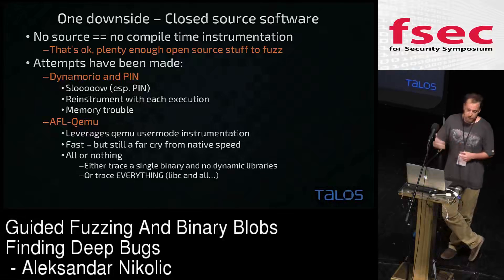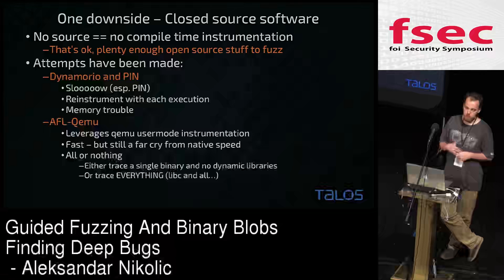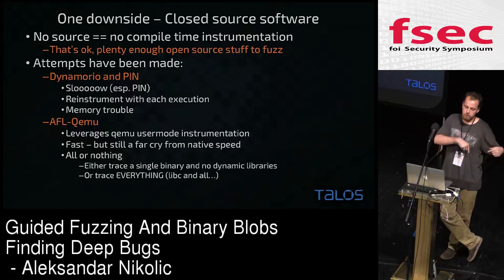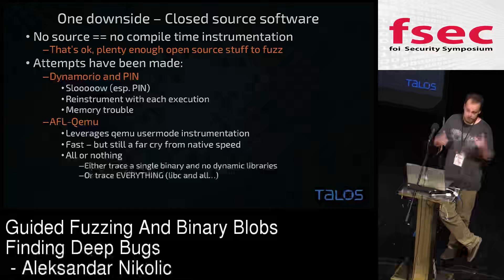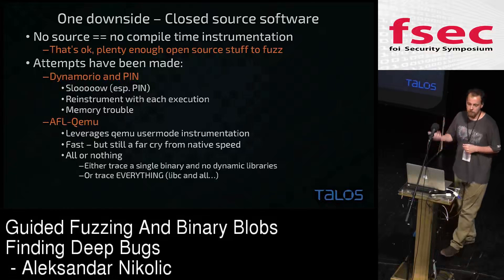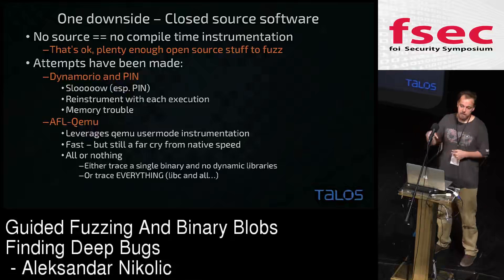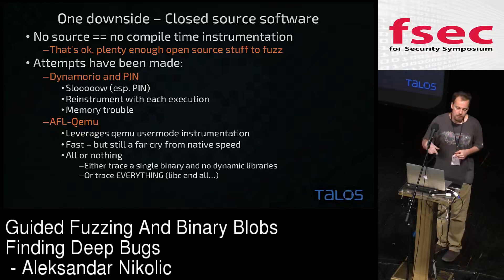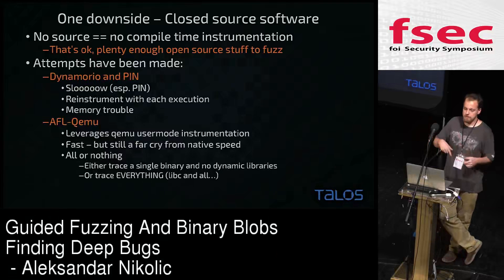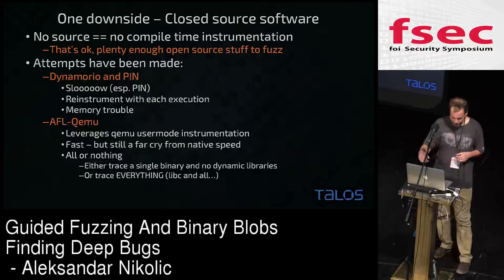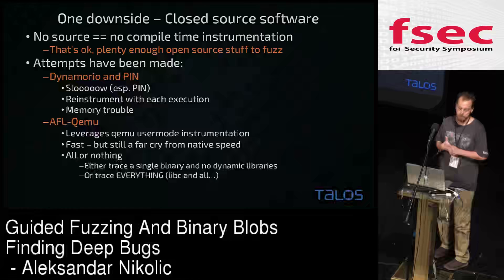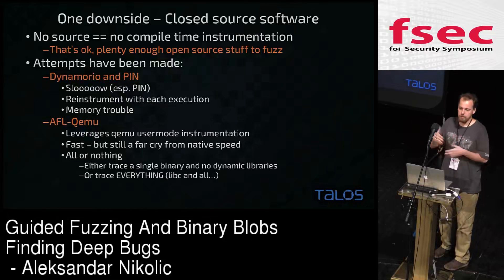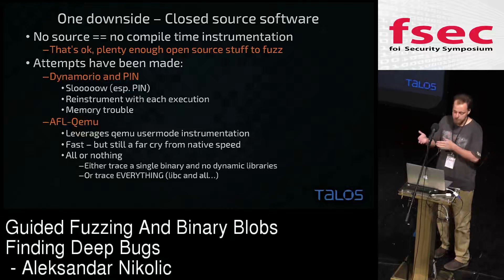The one thing that did work and does work is AFL-QEMU, which leverages QEMU's user-mode instrumentation. When you run the binary through QEMU, it adds instructions during the translation layer. It's faster than the previous two, but still far, far away from native execution speed. An additional problem is that we either trace only the main binary or we trace everything — all the shared libraries used by the binary. I rarely want to fuzz libc or libm; I want to fuzz libJPEG or something specific like that.